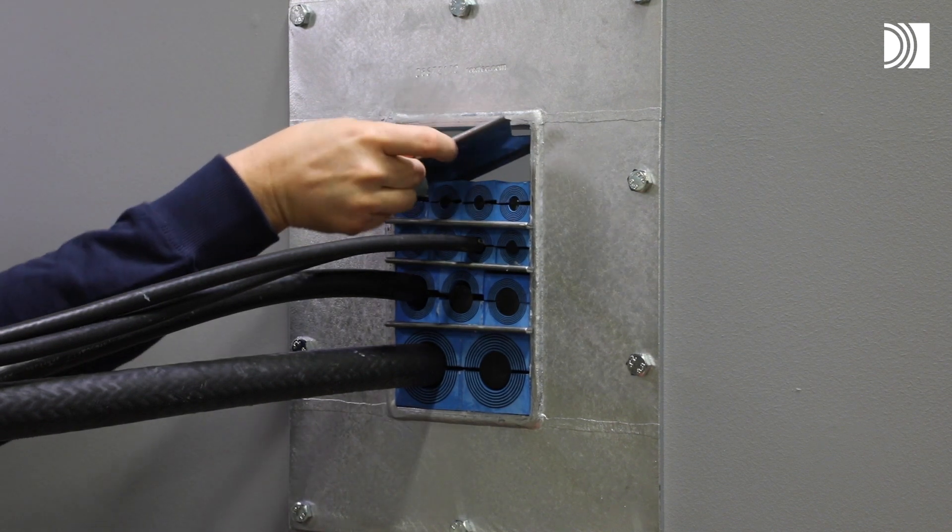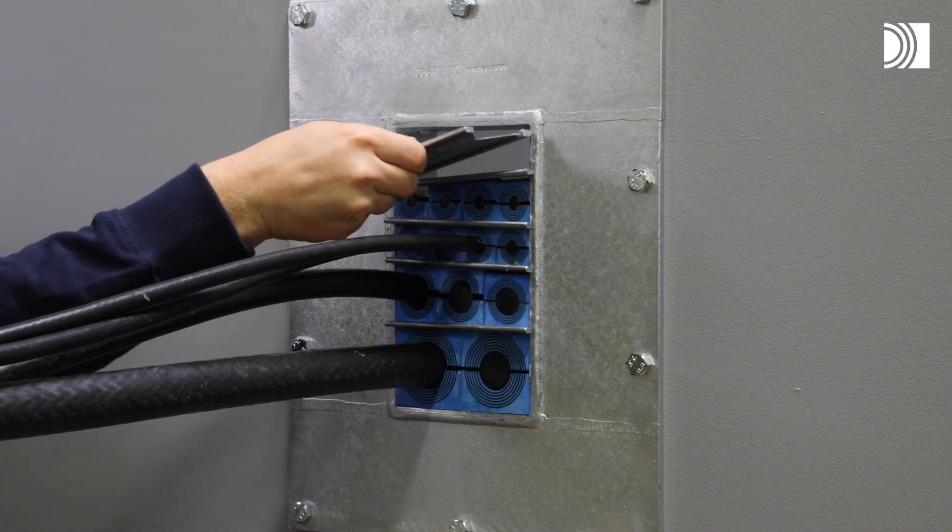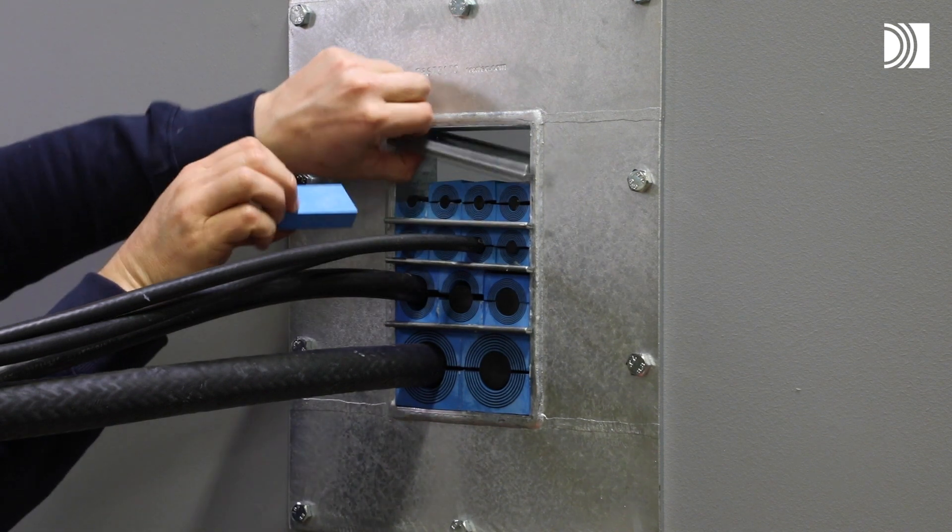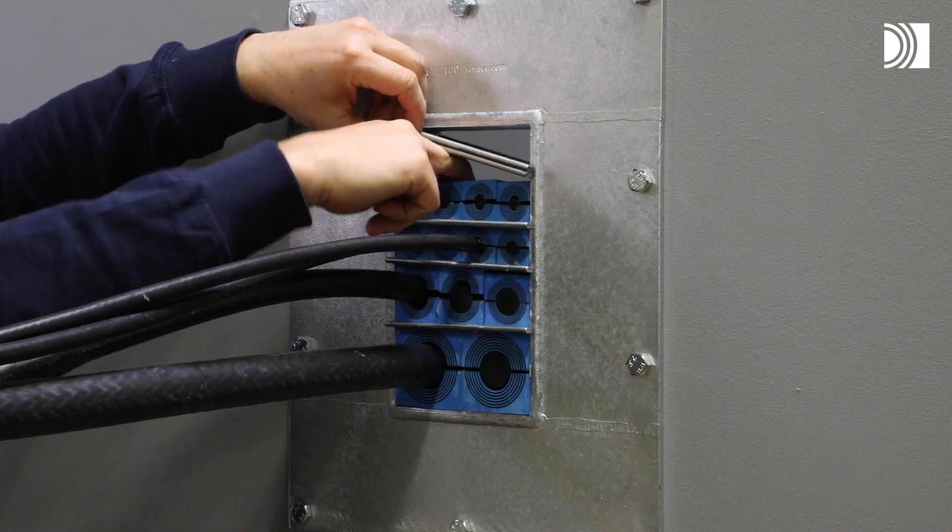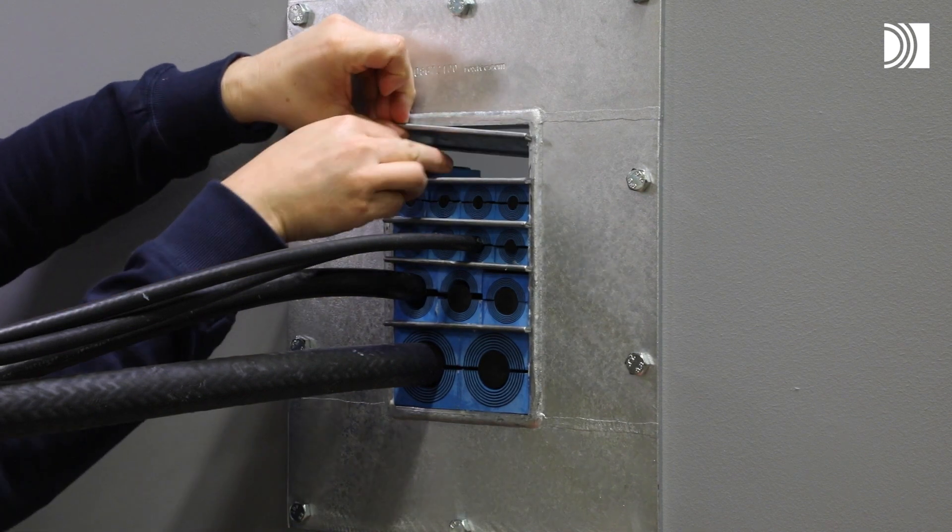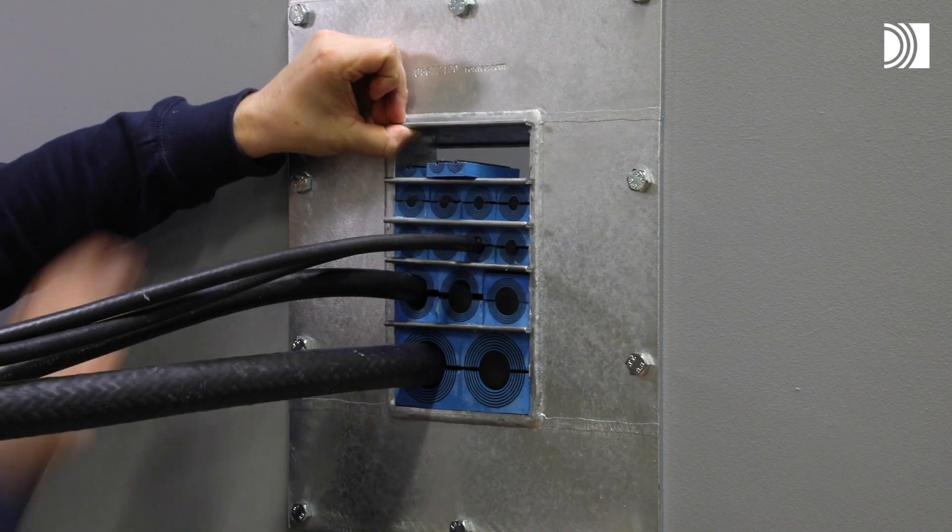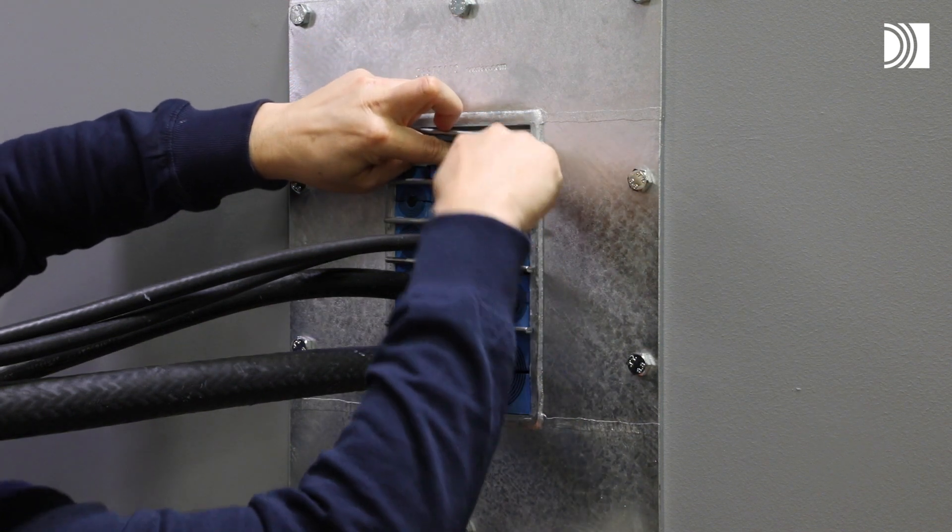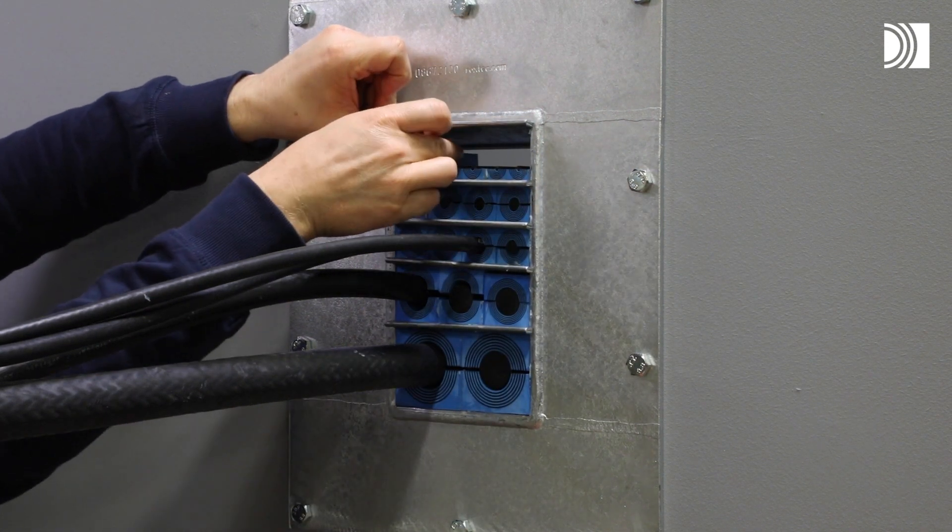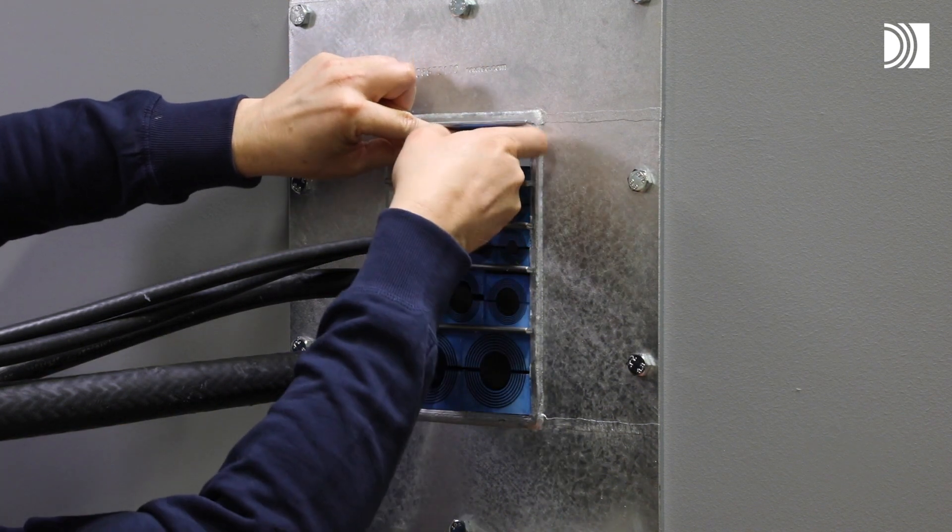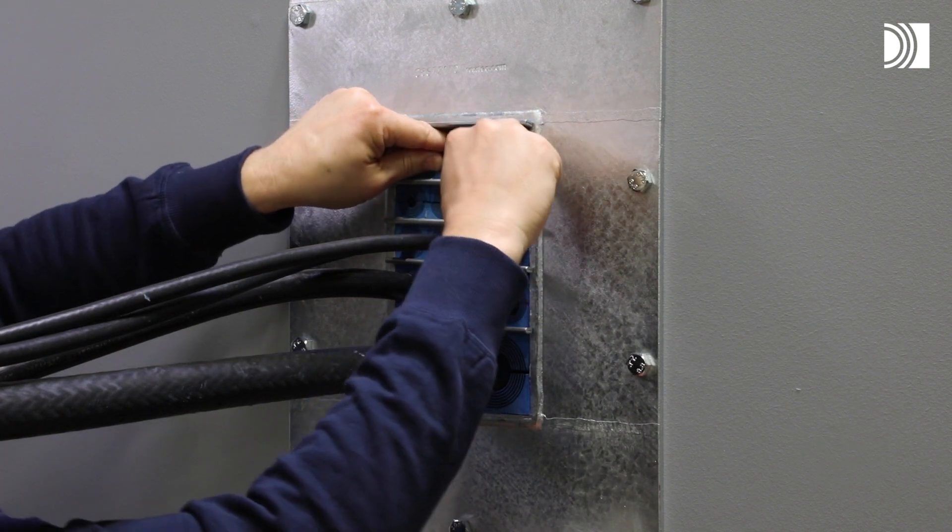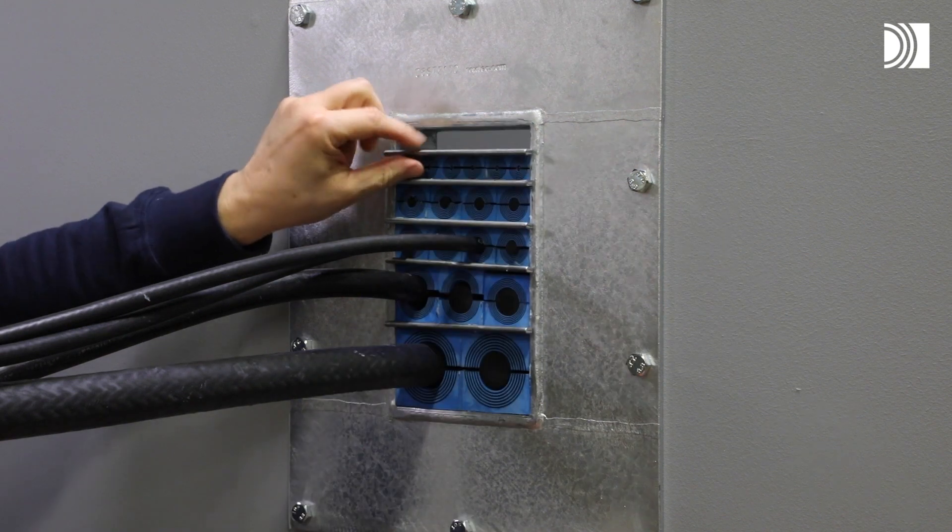Before inserting the final row of modules, insert two stayplates. Separate the two stayplates and insert the final row of modules between the stayplates. Drop the upper stayplate on top of the modules.